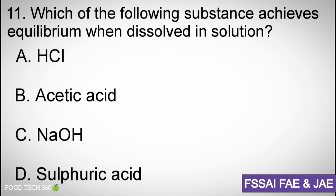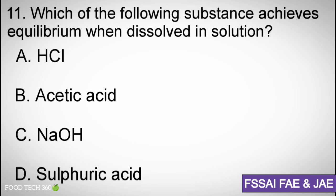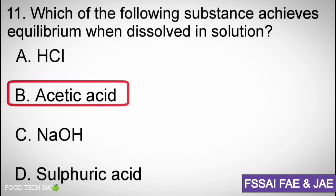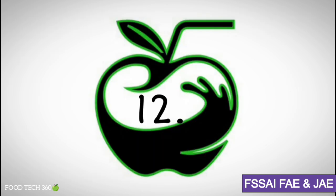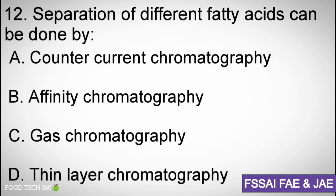Question number eleven: Which of the following substance achieves equilibrium when dissolved in solution? Options: (a) HCl, (b) acetic acid, (c) NaOH, (d) sulfuric acid. Correct answer: (b) acetic acid.